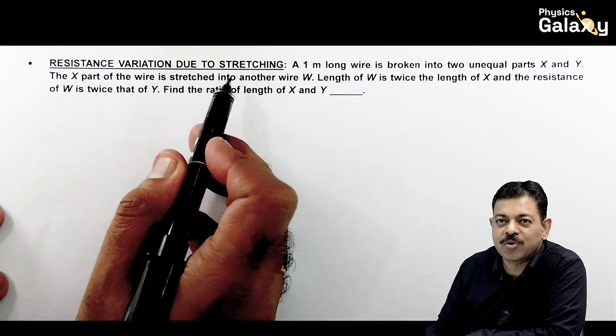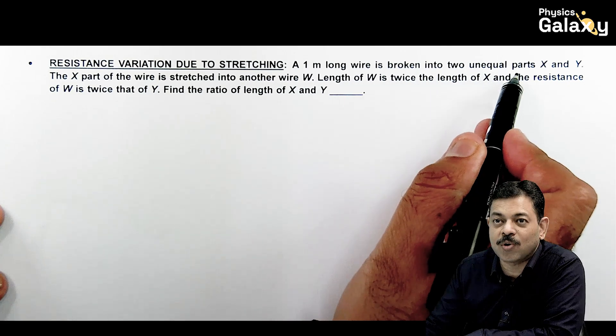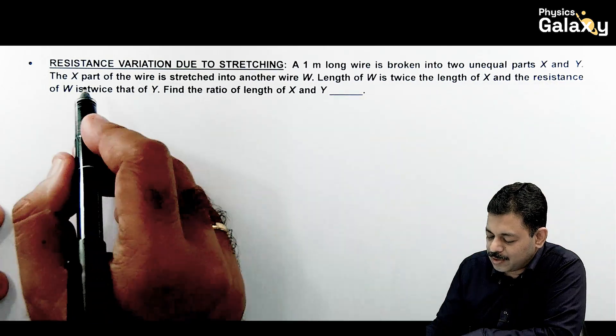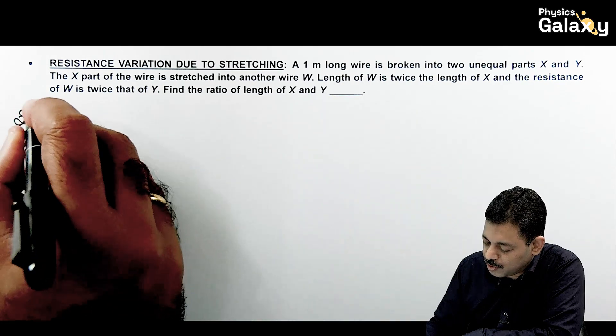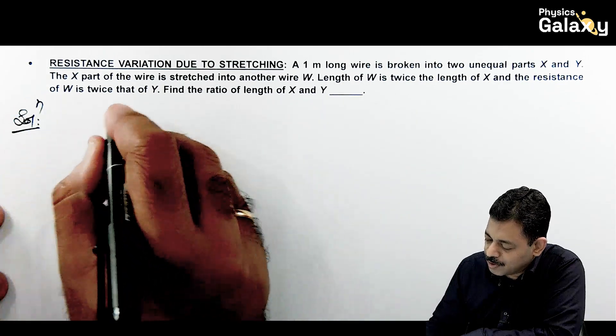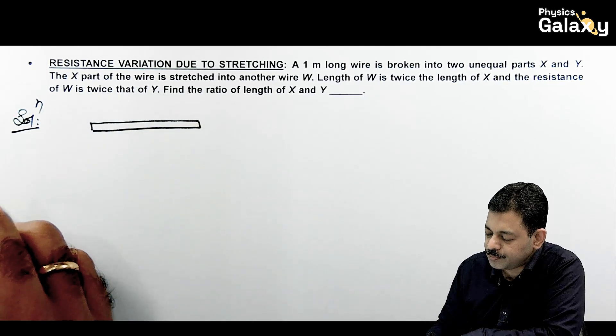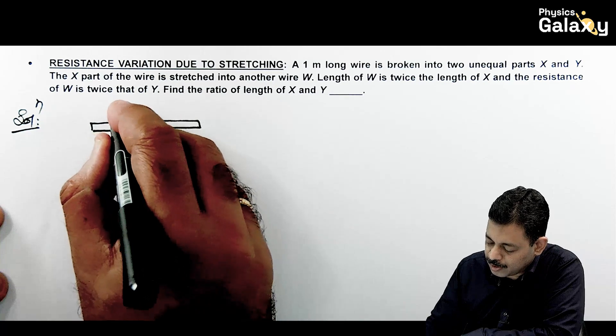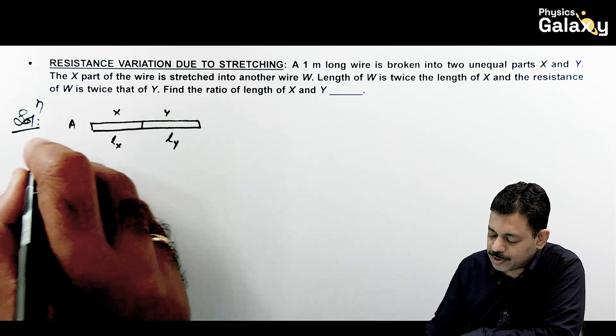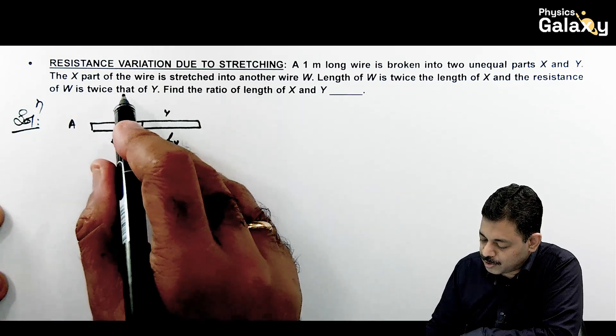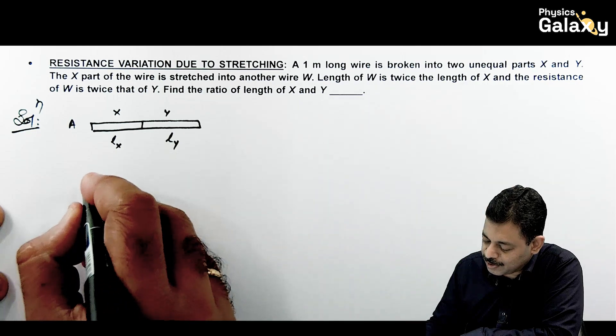Here we will talk about resistance variation due to stretching. A 1 meter long wire is broken into two unequal parts X and Y. The X part of wire is stretched into another wire W. If we draw the situation, a long wire is broken into two parts X and Y with lengths LX and LY. Wire X is stretched to another wire where length of W is twice the length of X.